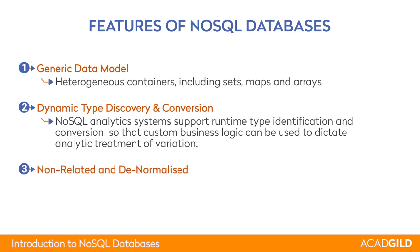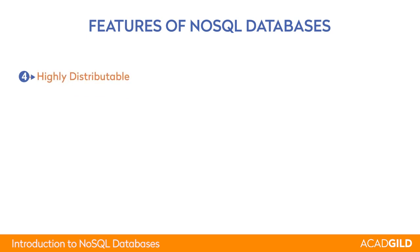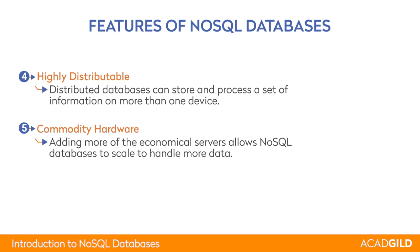NoSQL Databases store data usually in a single table as they have less inclination towards joining of data. The data is stored in raw or denormalized format, which is very useful. Besides, NoSQL Databases can be built in a cluster of commodity hardware as they are highly distributable, supporting horizontal scaling out as a core principle.